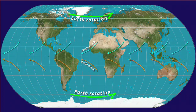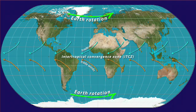Along the equator, the trade winds meet in the Intertropical Convergence Zone, or ITCZ, at the juncture between the north and south Hadley cells.